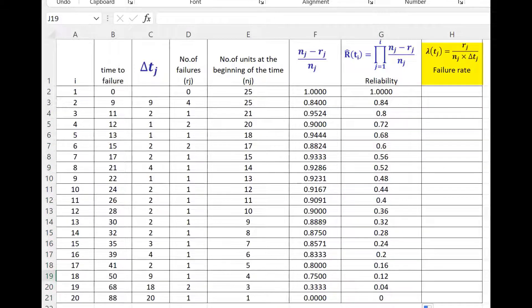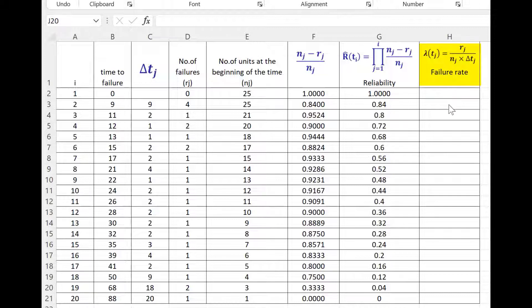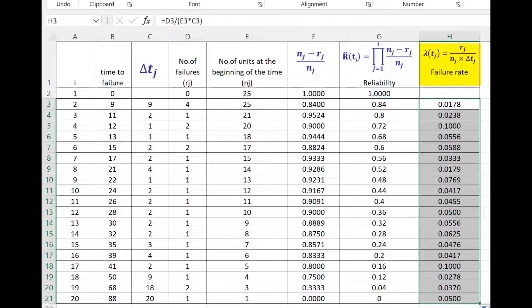We can also calculate the failure rate lambda tj for each step and that is given by rj upon nj into delta tj. So I calculate the failure rate. We will start calculation from the second term because in the denominator there is delta tj and for the first term it doesn't exist. So I will just use the formula equal to rj I select 4 divided by, let us put a bracket, nj is 25 star delta tj is 9 for the second row. So the failure rate is 0.0178. I can copy this formula. And here is the failure rate for all the timings.